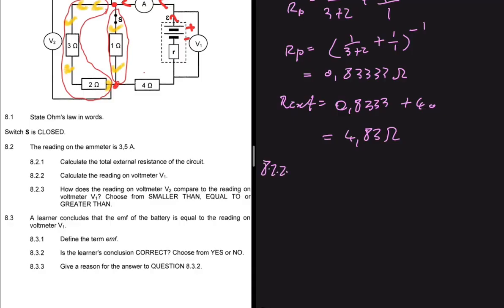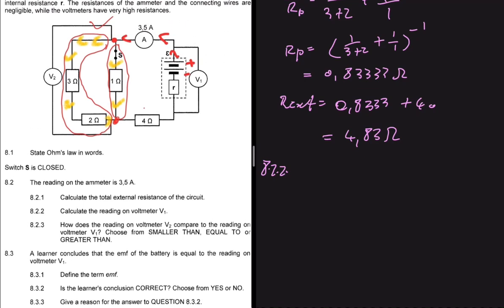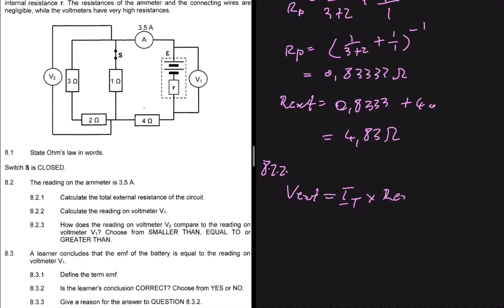Question 8.2.2 asks us to calculate the reading on voltmeter V1. You have to ask yourself: if the voltmeter is connected across the battery and current is flowing to the external resistance, what will V1 read? V1 will read V_external. V_external equals I multiplied by R_external. If a switch were open with no current flowing, V1 would read EMF, but here current is clearly flowing to the resistors, so V1 reads V_external.